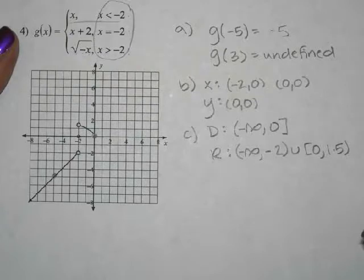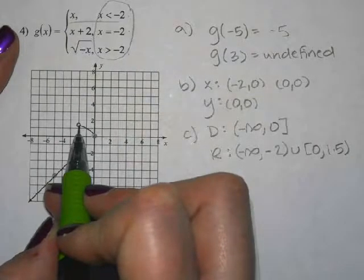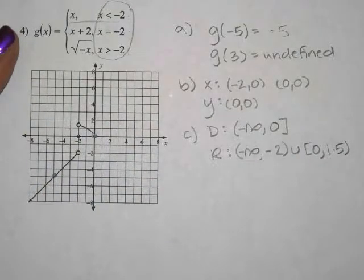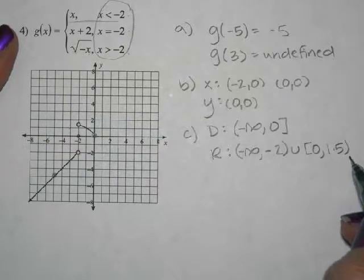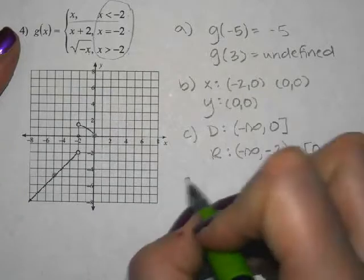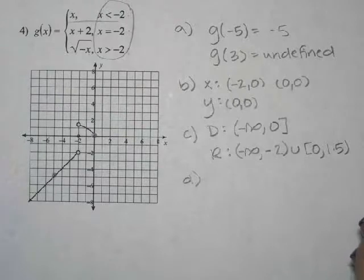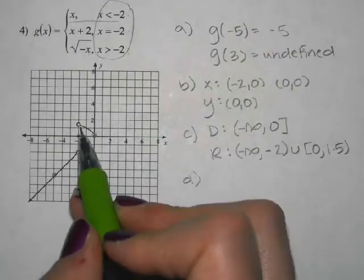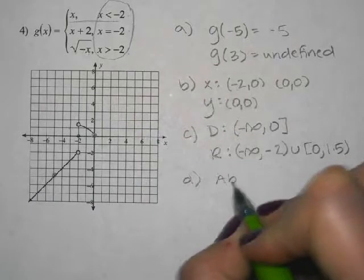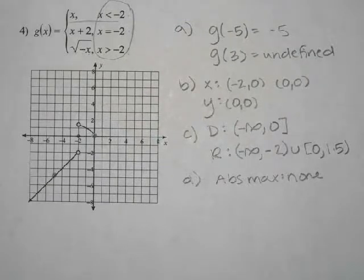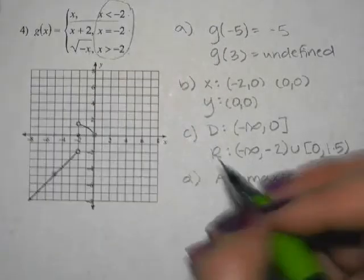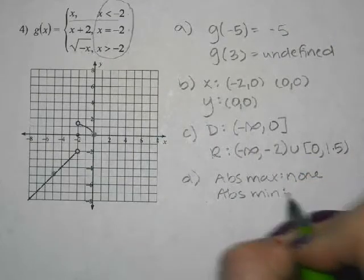A student asks about the dot at the top. It might be a little less than 1 and a half, but that's okay. I put a parenthesis around the 1 and a half because it's an open circle — it's not truly there. For part D, absolute maximums and absolute minimums: is there a very highest point? Yes, but it's a hole, so it doesn't count. Absolute max is none. Is there a very lowest point? No, because it's an arrow — arrows don't count. Absolute min is also none, because it goes down forever.